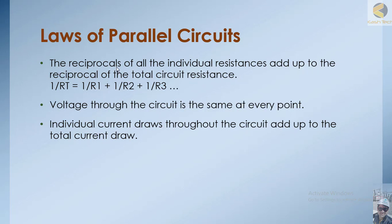The reciprocals of all individual resistances add up to give the reciprocal of the total resistance of the circuit. So in parallel, if you want to find the total resistance, you use this formula: 1 over R_total is equal to 1 over R1 plus 1 over R2 plus 1 over R3, and so on. This is the formula for total resistance.